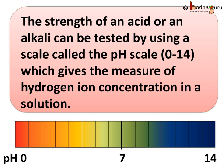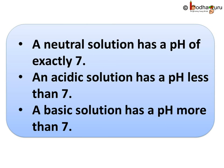To sum up what we learnt today: the strength of an acid or an alkali can be tested by using a scale called the pH scale, 0 to 14, which gives the measure of hydrogen ion concentration in a solution. A neutral solution has a pH of exactly 7. An acidic solution has a pH less than 7, whereas a basic solution has a pH more than 7. pH is very important in real life and we shall learn that in our next class. Until then, bye bye.